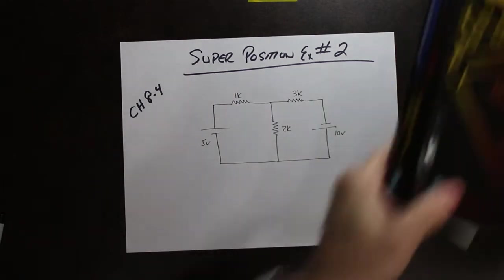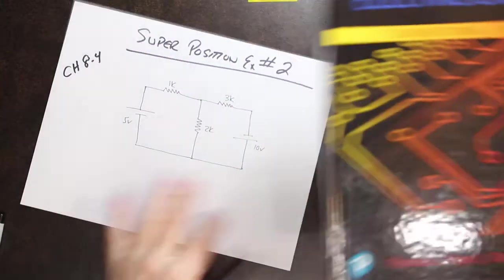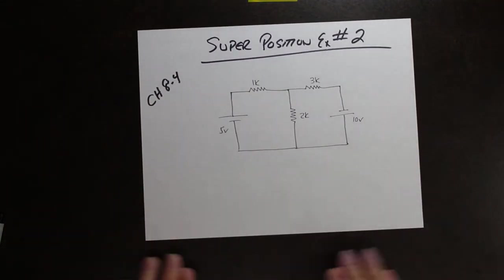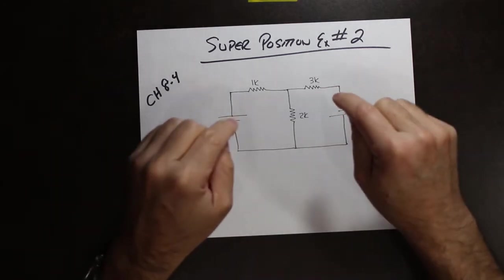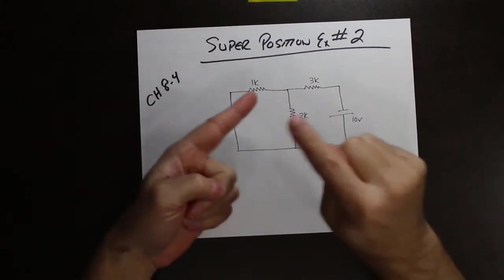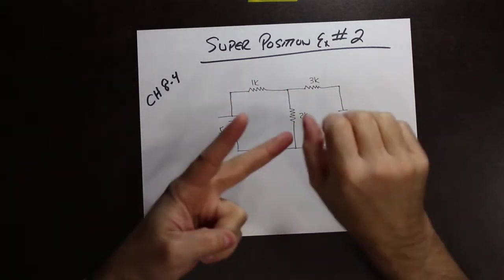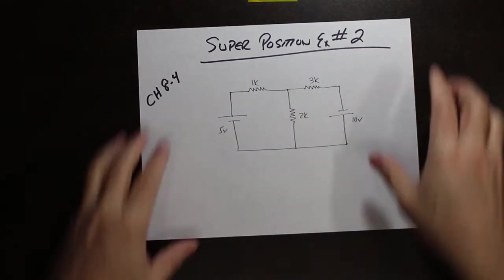If you need more information, it's in chapter 8-4 of our textbook — Principles of Electric Circuits: Conventional Current by Floyd and Buchla. What we're going to do is go through this example; the procedure is identical. We're going to look at each power supply individually and then put it all together back in the original circuit at the end. We're concerned with two things: one is the magnitude of the current, and the second is the direction of the current flow.